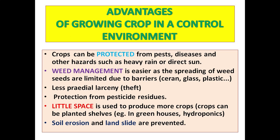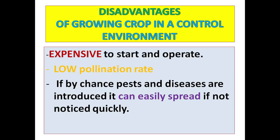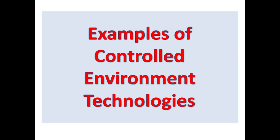Number six, soil erosion and landslides are prevented. Vertical farming is encouraged in this type of agriculture and crops are more protected from the elements. Disadvantages of growing crops in a controlled environment: number one, expensive to start and operate; number two, low pollination rate; number three, if pests and diseases are introduced by chance, they can easily spread if not noticed quickly.